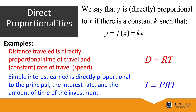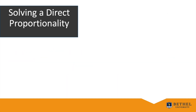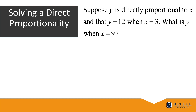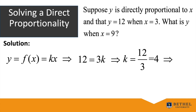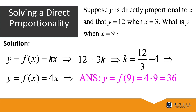Example: y is directly proportional to x, and y = 12 when x = 3. What is y when x = 9? Assume y = f(x) = kx. Substituting: 12 = 3k, so k = 4. The function is y = f(x) = 4x. When x = 9: y = f(9) = 4 × 9 = 36.